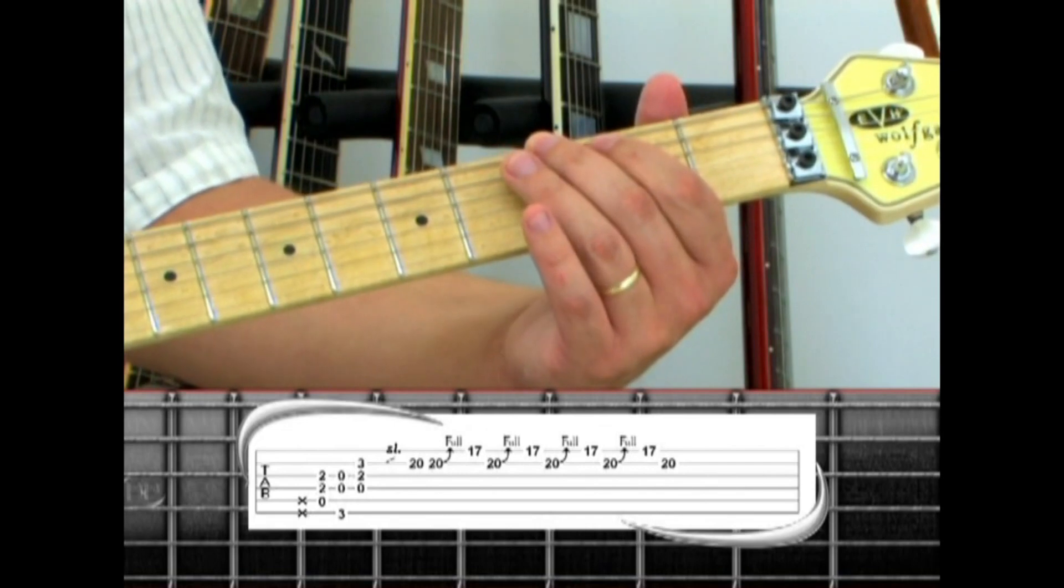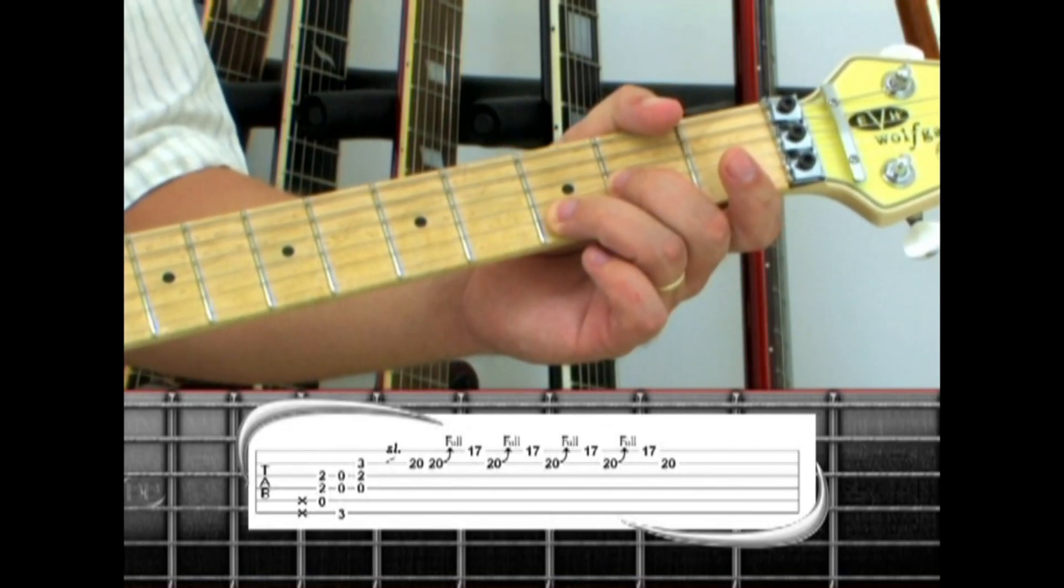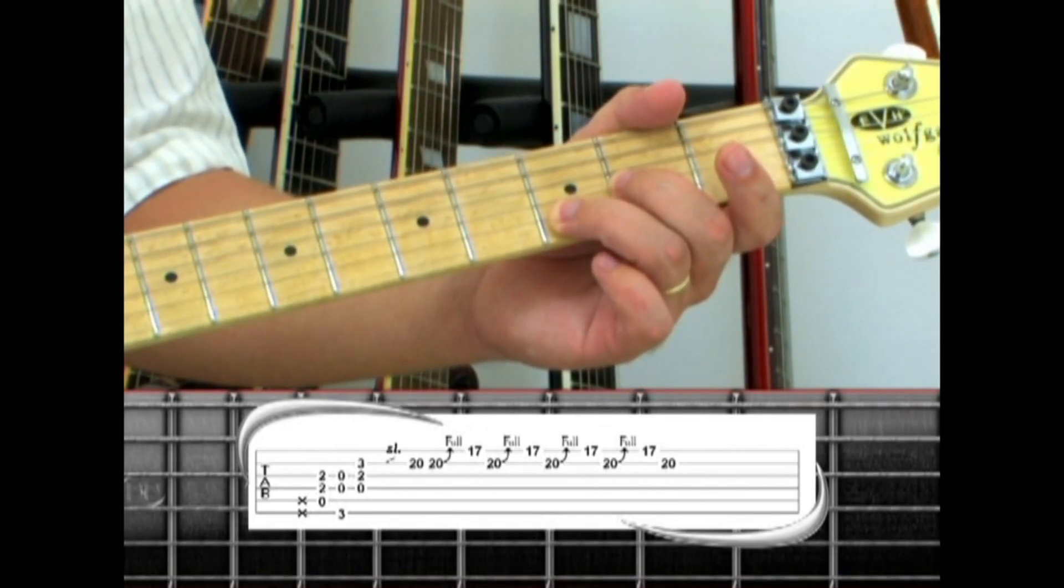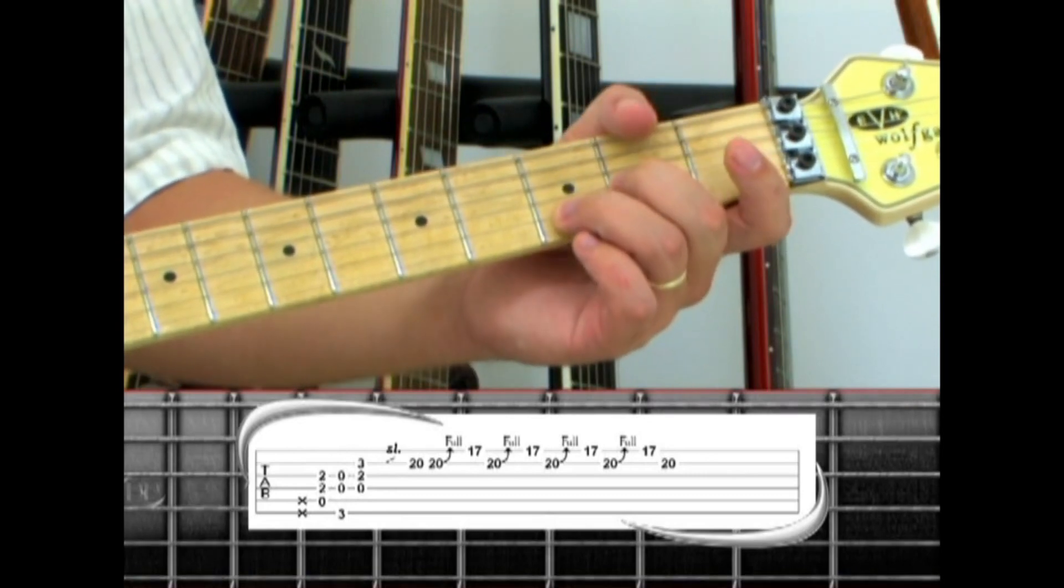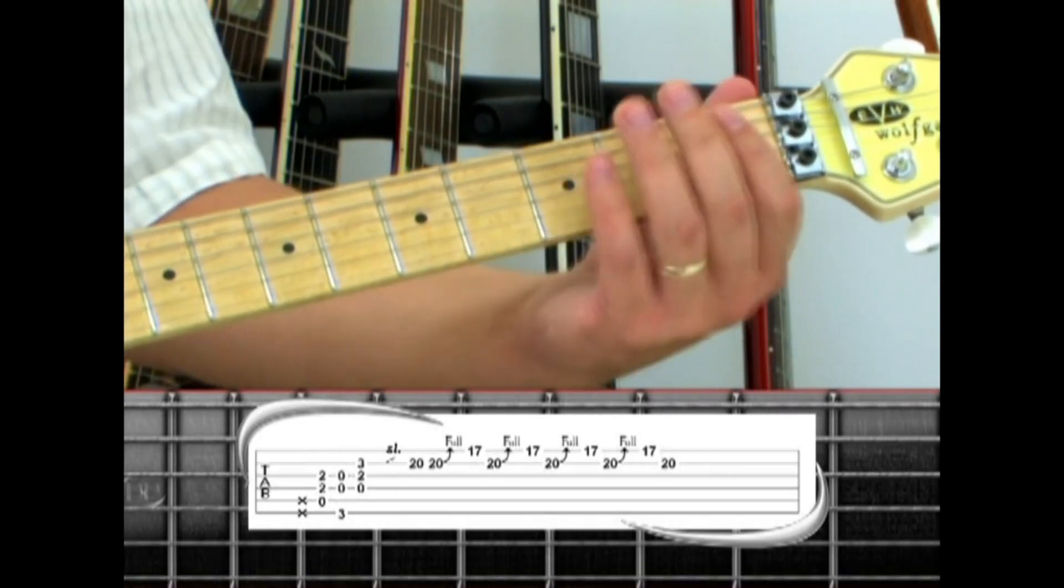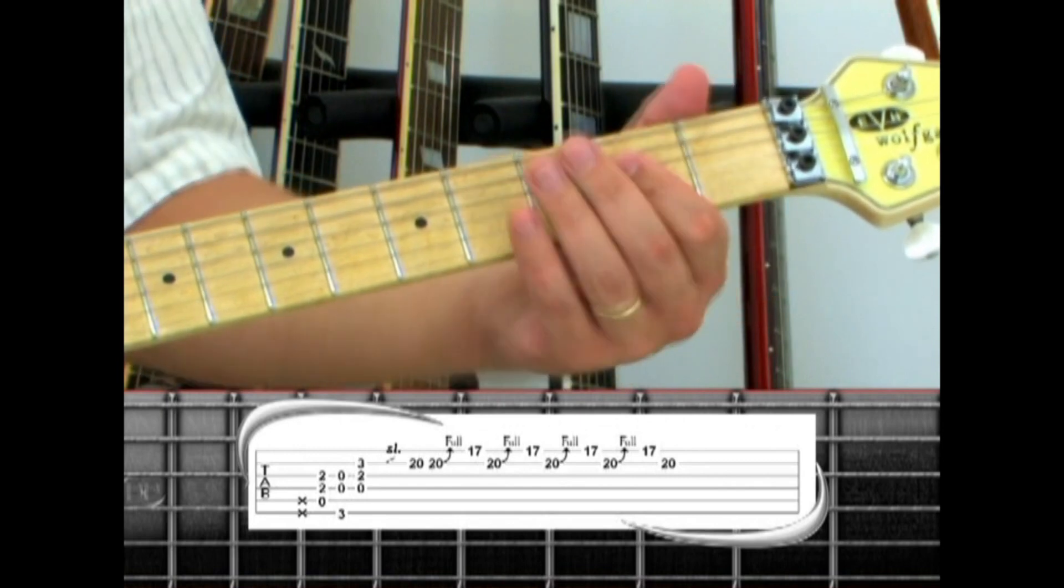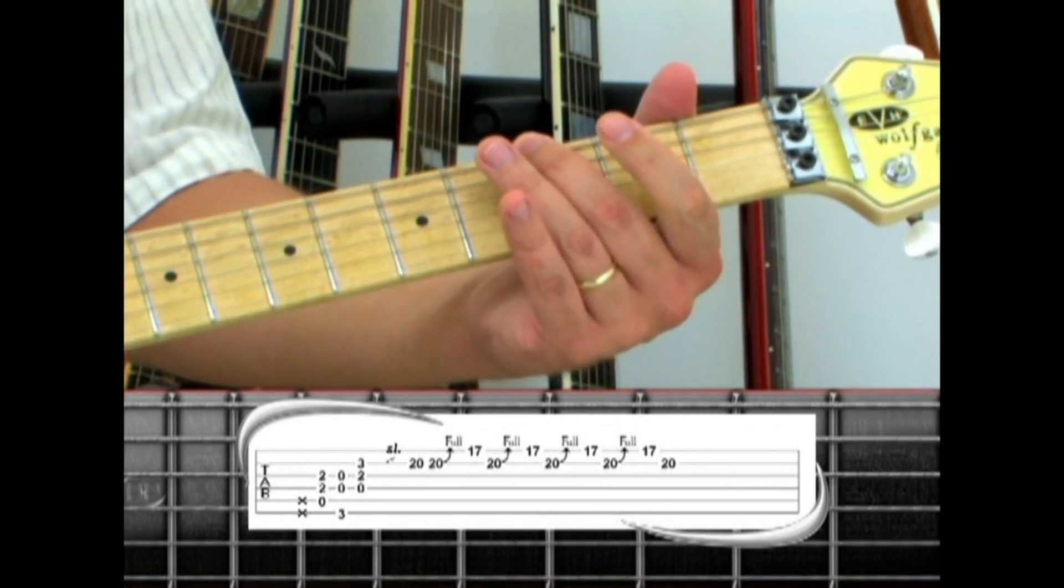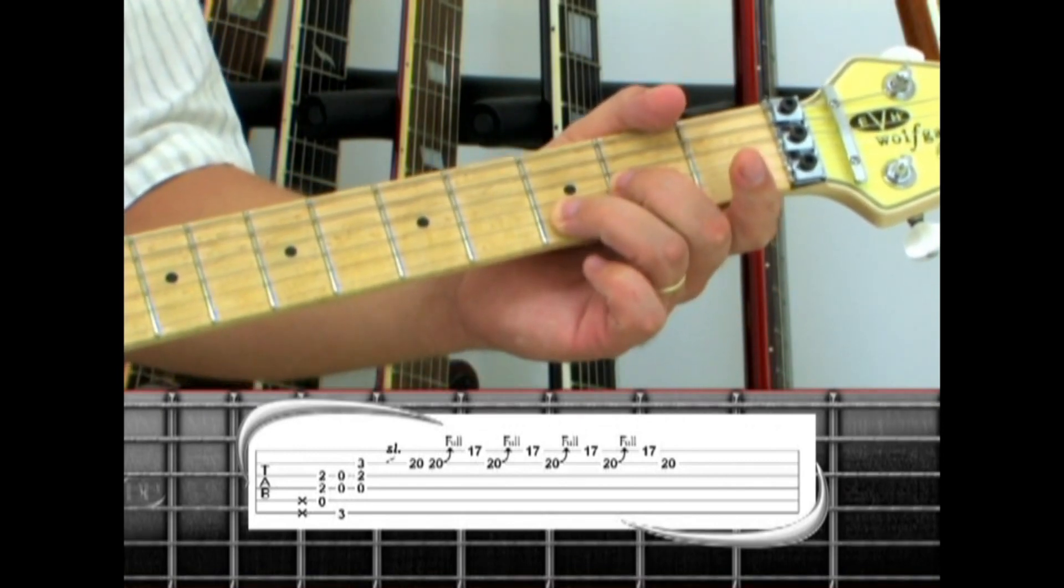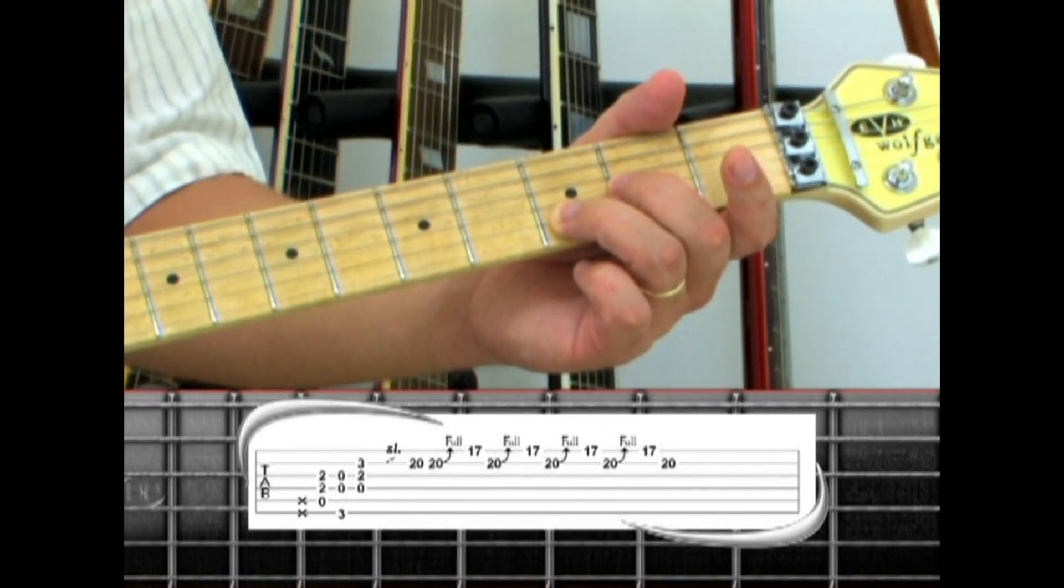The next chord is D5. Fourth string open, third string second fret, and second string third fret. All together, rake, A5, G5, D5. And slide the second string note up to the 20th fret.